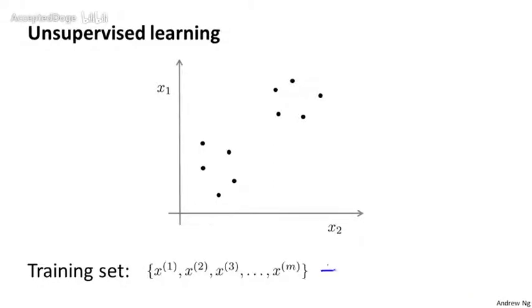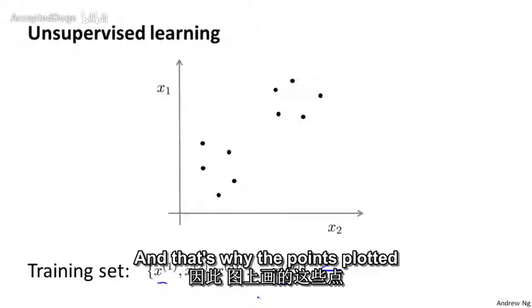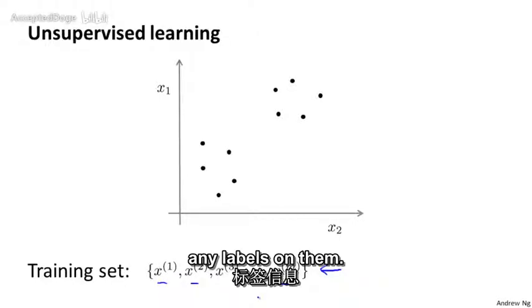And so our training set is written just x1, x2, and so on up to xm, and we don't get any labels y. And that's why the points plotted up on the figure don't have any labels with them.